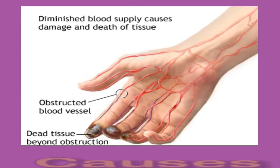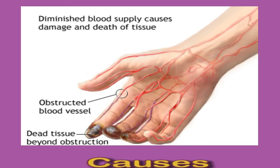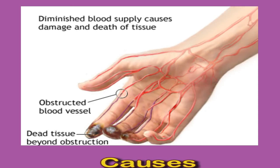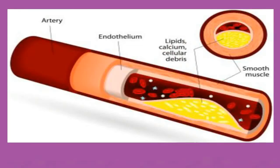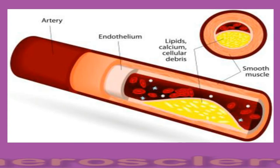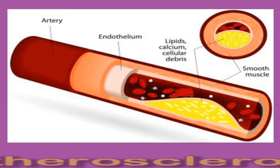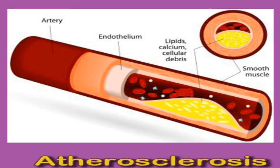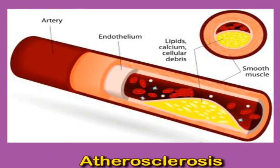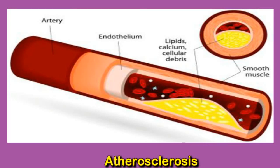Causes: Problems with the circulatory system are common. More than 64 million people in the United States, including children and adolescents, have conditions affecting the heart and circulatory system. There are many possible causes of poor circulation in the hands, including atherosclerosis. Atherosclerosis is a build-up of fatty substances in the arteries that restricts blood flow around the body. Atherosclerosis often causes no symptoms until it becomes a medical emergency, such as a heart attack or stroke.